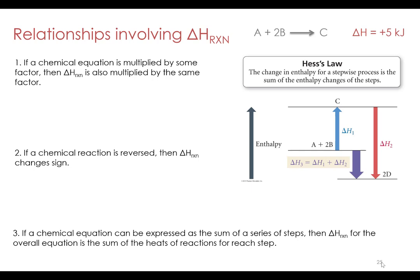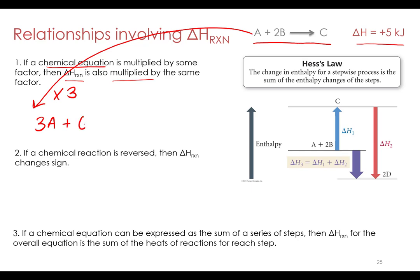If we take a chemical equation — say, A plus 2B goes to C with an enthalpy change of plus 5 kilojoules — we can multiply it by some factor, and all we have to do is multiply the enthalpy by that same factor as well. So if we multiply it by 3, instead of 1A plus 2B goes to C, we have 3A plus 6B goes to 3C, and our delta H becomes plus 15 kilojoules (5 times 3).